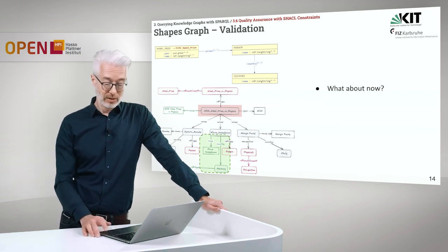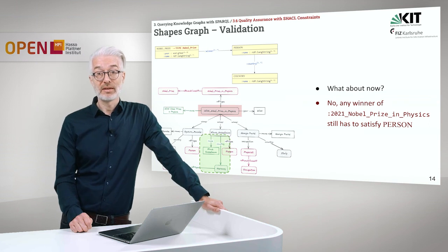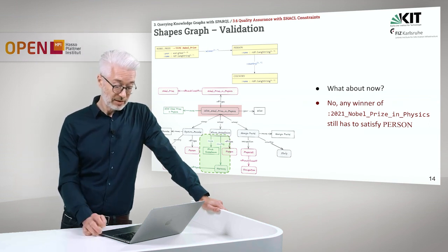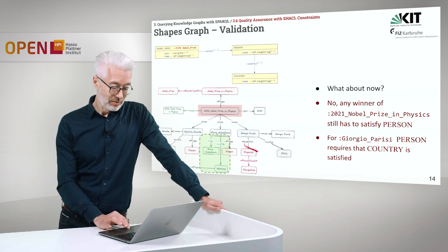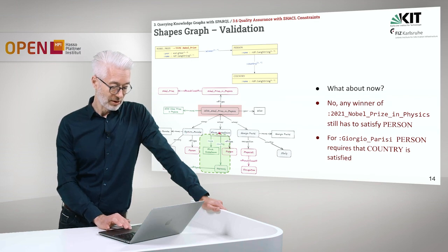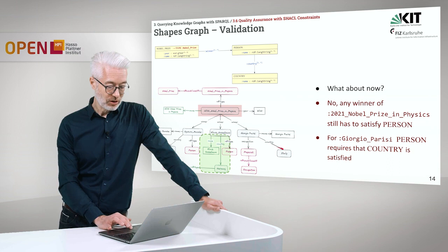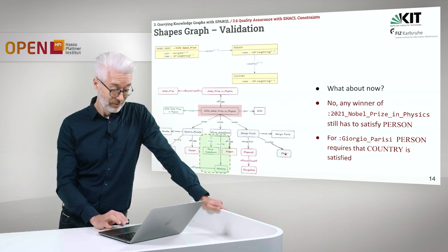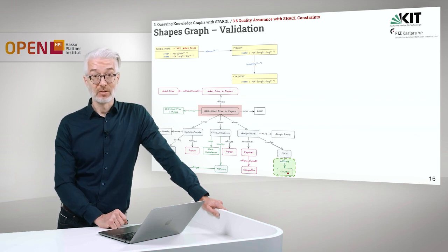What about now? Unfortunately not. Again, the result is that any winner of the 2021 Nobel Prize in Physics still has to satisfy the person shape. Of course, like Klaus Hasselmann, Giorgio Parisi also doesn't have a country. The USA is given for Syukuro Manabe and Germany for Klaus Hasselmann, but for Giorgio Parisi the country constraint has to be satisfied. We have here a connection to a thing called Italy, but Italy is not of type country.